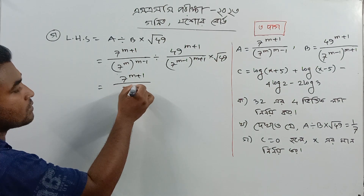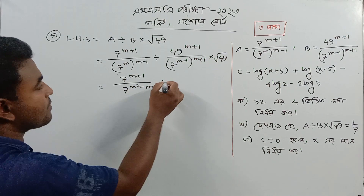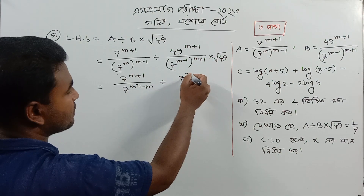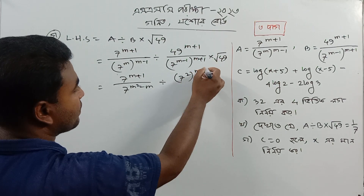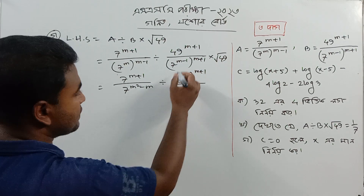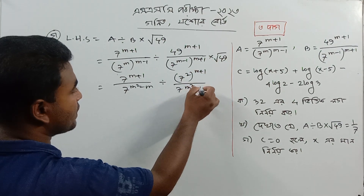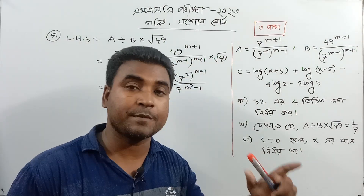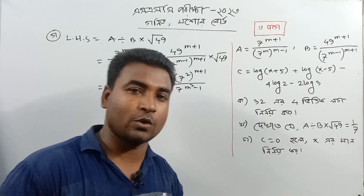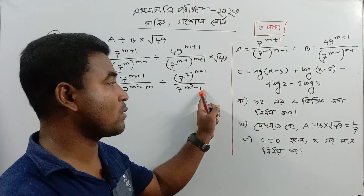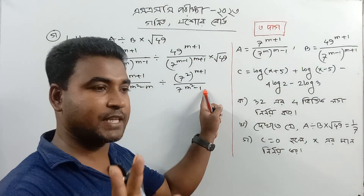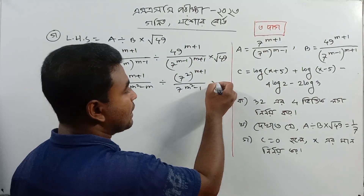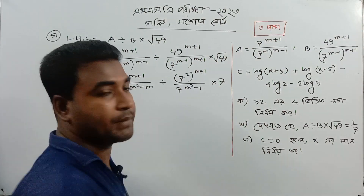That means one squared. A plus b into a minus b gives a squared minus b squared — one squared. Therefore a squared minus b squared is not high, and the root is 7.